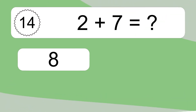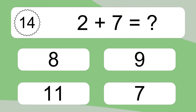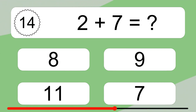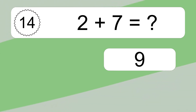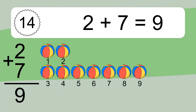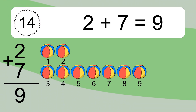2 plus 7 equals what? 2 plus 7 equals 9. Let's count it: 1, 2, 3, 4, 5, 6, 7, 8, 9.